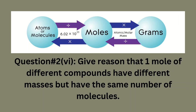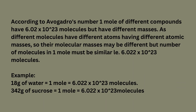Question number two, part six: give reason that one mole of different compounds have different masses but have the same number of molecules. According to Avogadro's number, one mole of different compounds has 6.02 × 10²³ molecules but different masses, as different molecules have different atoms having different atomic masses. So their molecular masses may be different, but the number of molecules in one mole must be the same: 6.022 × 10²³ molecules.